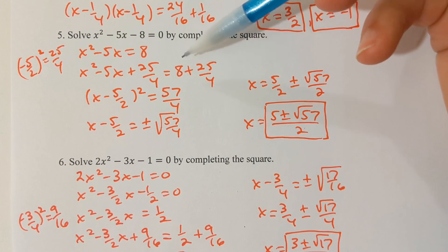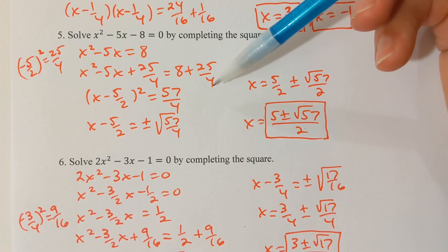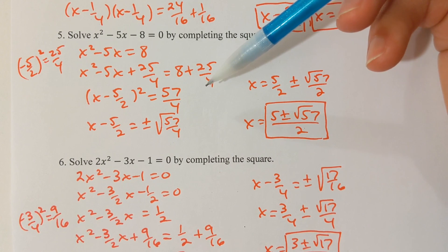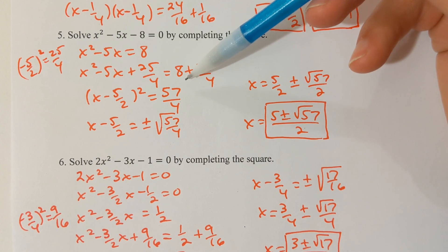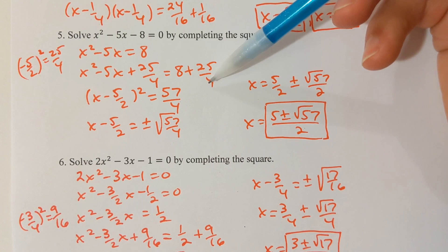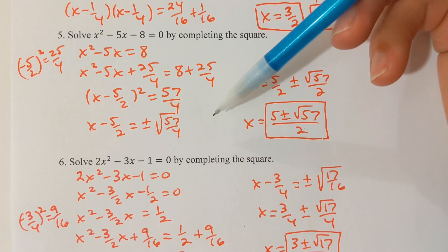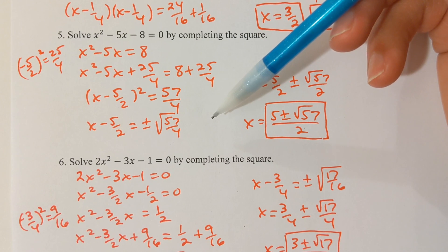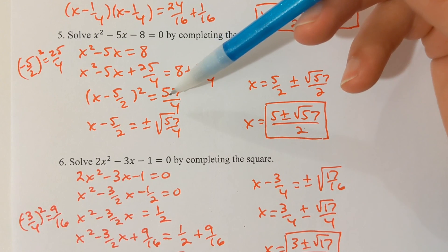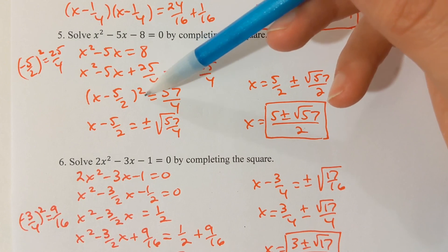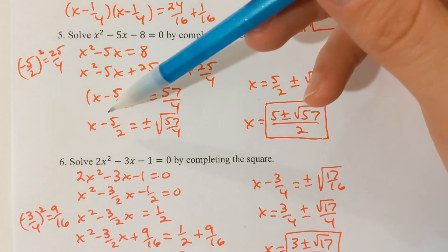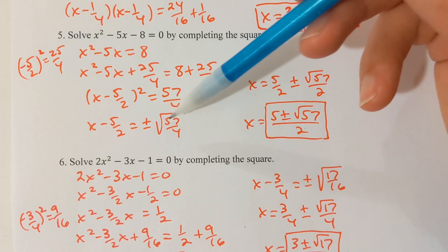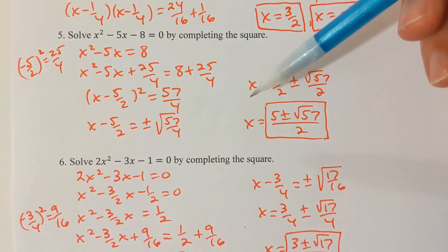On the right: 8 + 25/4 — I'm going to have to get my common denominator. 8 is the same as 32/4, so 32/4 + 25/4 = 57/4. Now I'm ready to take the square root of both sides to get rid of the power of 2, giving x - 5/2 = ± √(57/4).